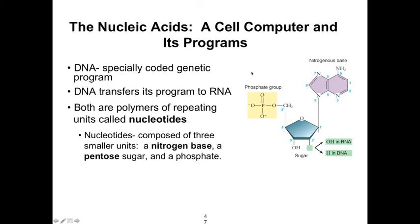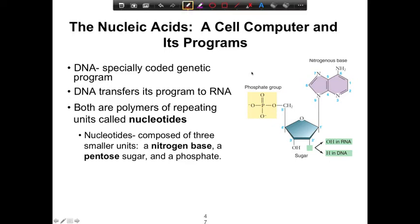Now let's look at nucleic acids — DNA and RNA. They're analogous to a cell's computer and all the programs that run it. DNA is the genetic program and transfers this to RNA. RNA then carries the message to ribosomes to manufacture proteins. Both DNA and RNA are polymers of repeating units called nucleotides. A nucleic acid is the polymer composed of nucleotide monomers held together by phosphodiester bonds.